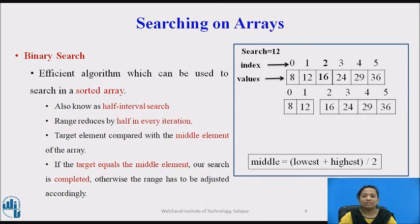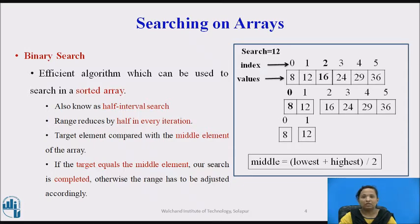Search continues in the first half because the search element 12 is smaller than the middle element 16. Now the search range is from index 0 to index 1. The middle element in this part is calculated using new lowest and highest indices 0 and 1, giving middle at index 0, which is element 8 — not matching 12. Search continues in the second half since 12 is greater than 8. Now the search range is index 1 to 1, giving middle at index 1, which is element 12 — matching our search element. Search is completed.